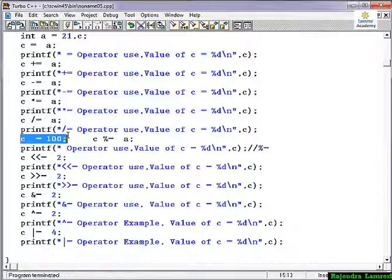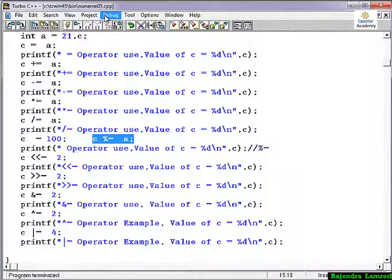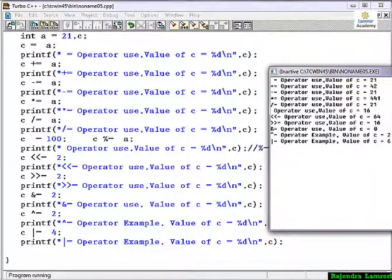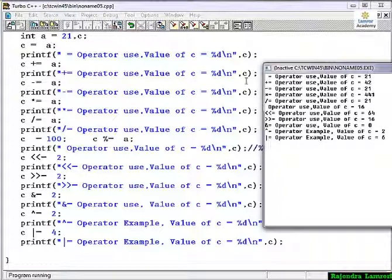So here I have taken c equal to 100. Modulus operator means 100 divided by 21, then it will give you remainder 16. So I have told these things. I have shown the example. It is correct or not. So you see here, see here the values I have taken. The first is equal operator is 21. Second 21 plus 21 is 42. Third is 42 minus 21 is 21. 21 into 21 is 441. And then 441 divided by 21 is 21. And then 100 modulus of 21 is giving you 16.